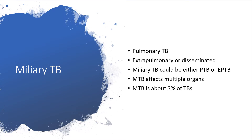Then there will be extra-pulmonary or disseminated tuberculosis — that is, beyond the lungs — spreading through the blood or lymphatic system. Miliary tuberculosis could either be in the lungs, with miliary lesions in the pulmonary system, or outside the lungs as extra-pulmonary tuberculosis. Don't worry — in a bit you will get the complete picture.